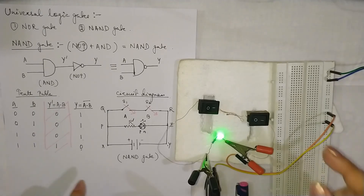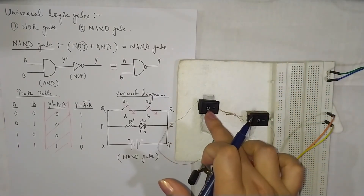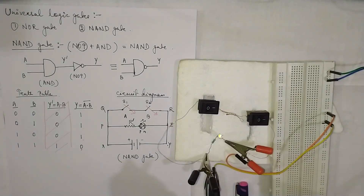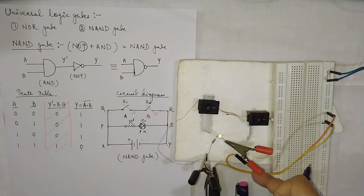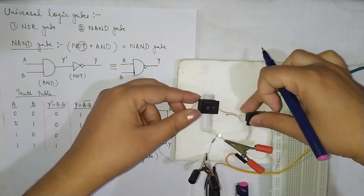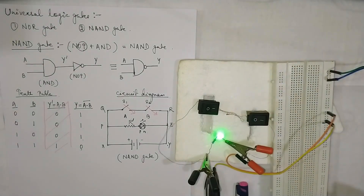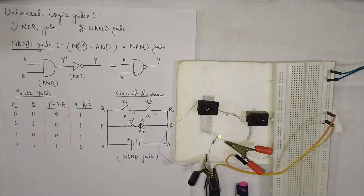Now let us make it 1 and 1. Both switches are 1. You see what is happening: if switches are 1 and 1, the output is 0 and LED is not glowing. This proves the current prefers to flow in the less resistive path — the upper branch — so the LED does not glow. Let us go back to 0, 0: this is 0 and this is 0, the LED is glowing again. So: 1, 0 — LED glowing; 1, 1 — LED not glowing.